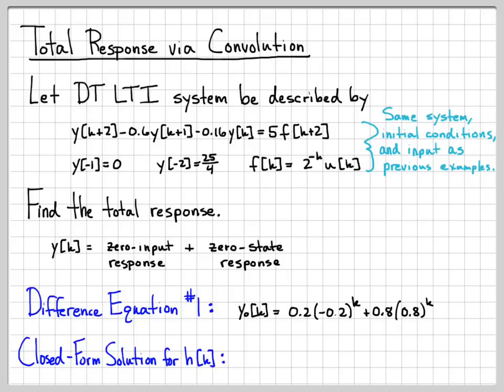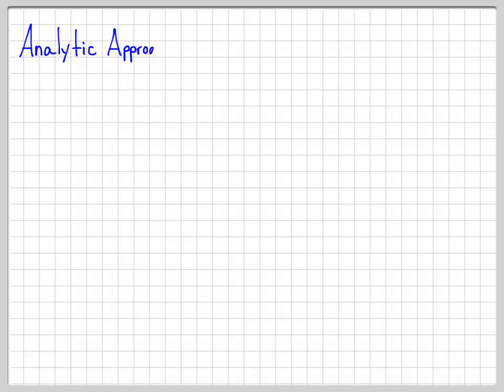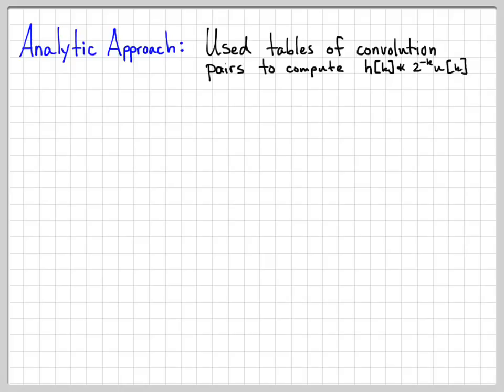So we've previously solved for the impulse response of this system. And the impulse response is what I need to solve for the zero-state response. The zero-state response is something we just solved for. The problem we worked called analytic approach, where we did discrete time convolution using table lookup. We actually used these tables of convolutions. And we used it to compute the convolution of h[k] with 2^(-k)u[k].